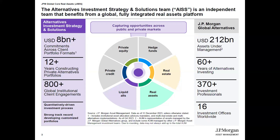At a high level, JP Morgan is a big alternatives player with over $212 billion in assets under management across alternatives — anything outside traditional public equities and public fixed income. The real asset side, including real estate, infrastructure, transportation, and liquid real assets, is a significant part — over half the platform. We've been doing this for over 60 years, and it's the existing private vehicles and strategies that JARA invests into.